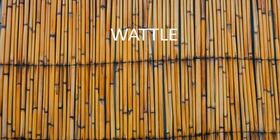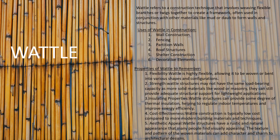Now let's discuss about the last material, which is Wattle. Wattle refers to a construction technique that involves weaving flexible branches or twigs together to create a framework, often used in conjunction with other materials like mud or daub to form walls or structures. Its uses include wall construction, fencing, partition walls, roof structures, shelter construction and decorative elements. Properties of wattle include flexibility, though wattle structures may not have the same load-bearing capacity as more solid materials like wood or stone masonry. Wattle structures can provide some degree of thermal insulation, helping to regulate indoor temperatures. It is typically low cost compared to modern building materials and has a rustic and natural aesthetic appeal.